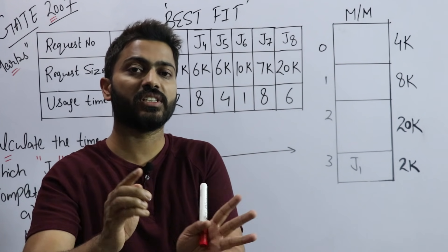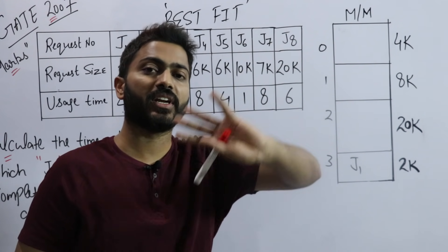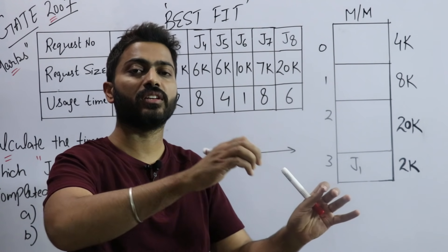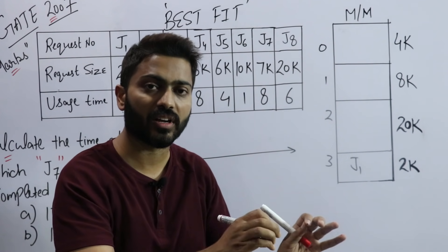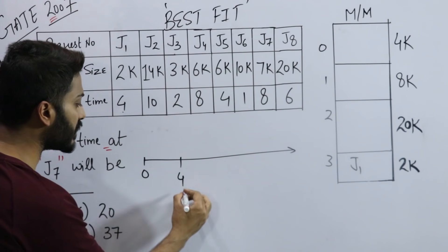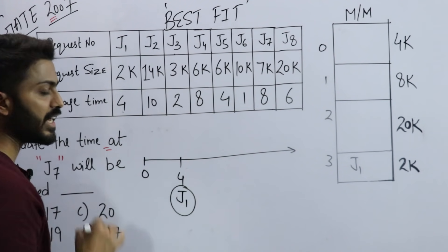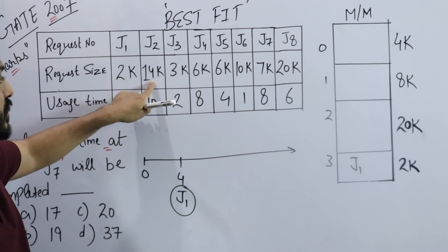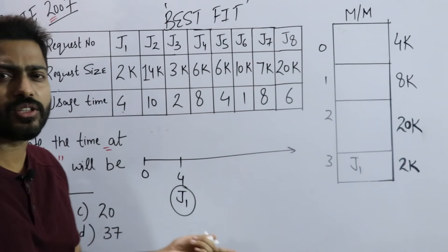Then we can place some other process or job there. So I mention here that J1 will complete at time 4.